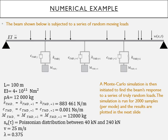I will very briefly prior to ending present a very short numerical example, I'm very wary of time. The beam shown here is a simple four span beam which we've been discussing subjected to a series of random moving loads. This length is 100 meters, its EI is 4×10¹¹ Newton meters squared.